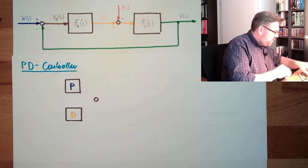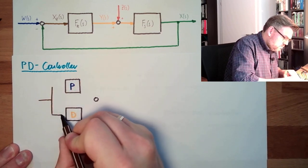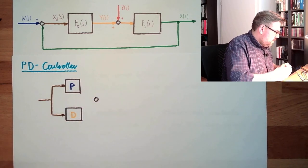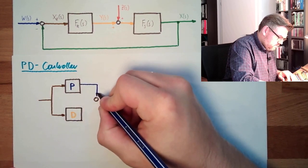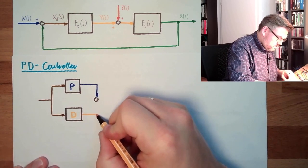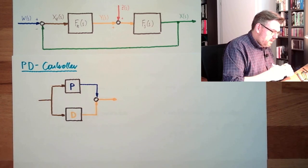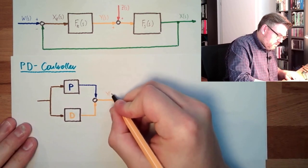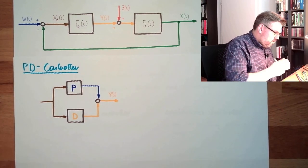Here we have the deviation. This is split. There is the output of the P, there is the output of the D. Both things are summarized, and here is our Y. So here is our correcting variable. Here is our control deviation.